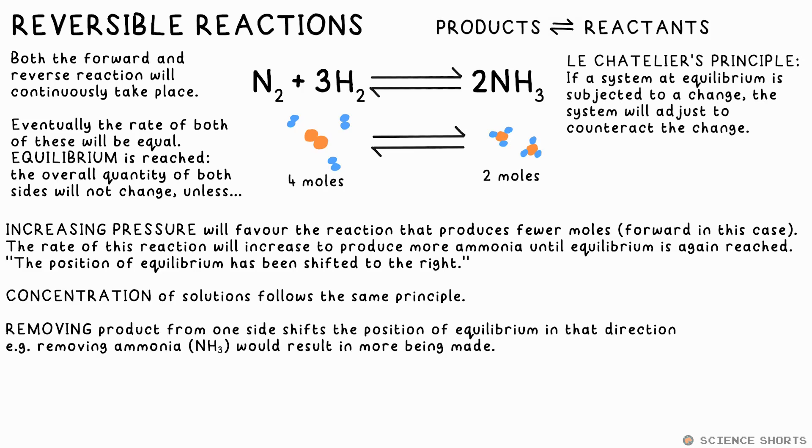Naturally, if you remove molecules from one side of the reaction, the position of equilibrium shifts in that direction, so more of that product is made. So if it's reached equilibrium and we remove ammonia from the vessel, then more ammonia will be made.